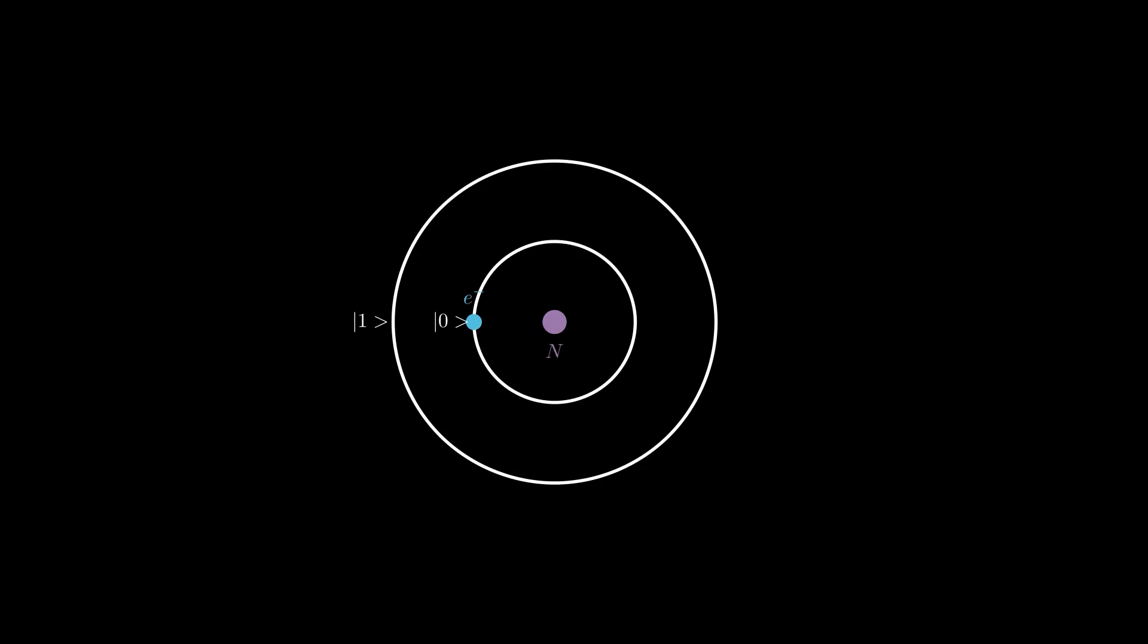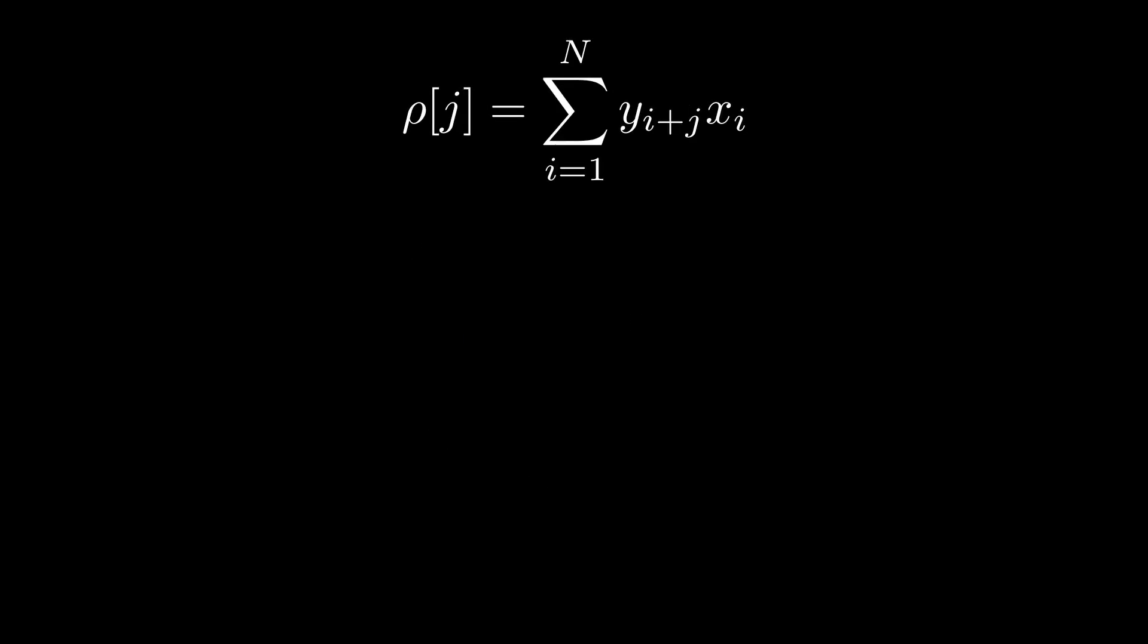For both classical and quantum computing, matched filtering starts by writing down a convolution, which turns out to be this sum that we'll call rho. Here, j is the time delay between x and y, x is a digitized template signal, which is our theoretical prediction, and y is the actual data, meaning what we measured with the detector.